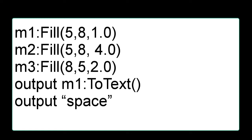The next line: lowercase m, one, colon, capital T, lowercase o, capital T, e-x-t, open parentheses, closed parentheses, side by side. The next line: lowercase output. Then quotation, lowercase space, and quotation.